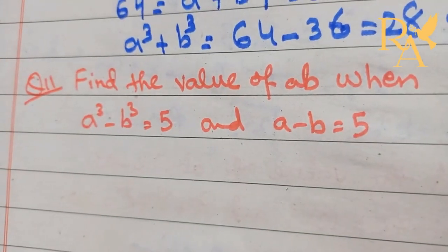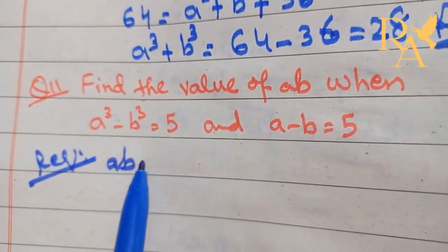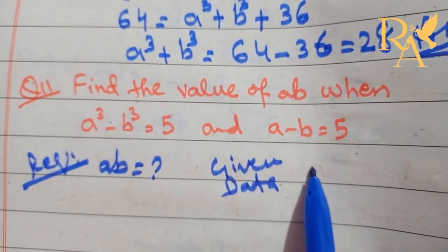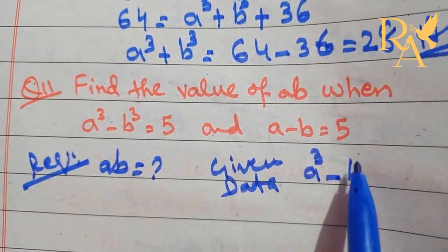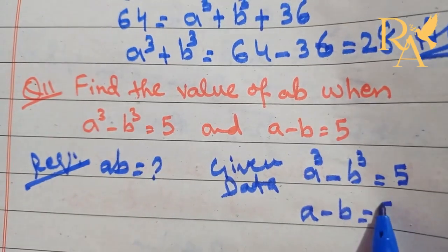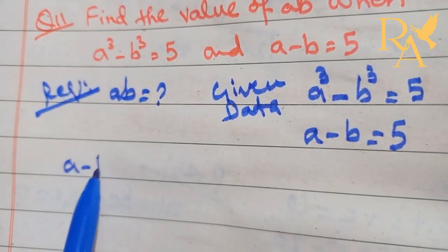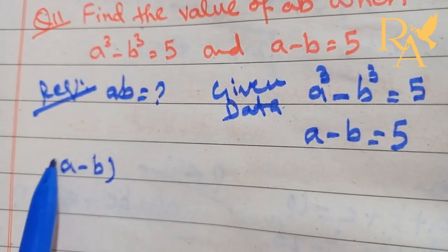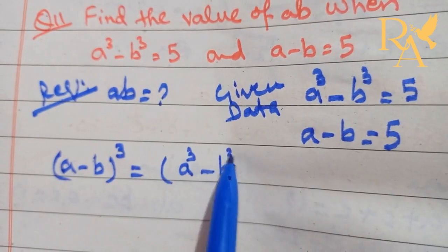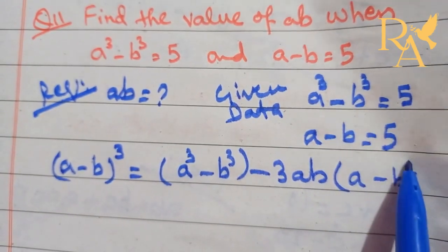In question number 11, AB is required. The given data is: A cube minus B cube is equal to 5, and A minus B is equal to 5. Now by using the formula, A minus B whole cube is equal to A cube minus B cube minus 3AB into A minus B.